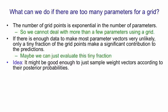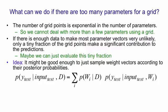An idea that makes Bayesian learning feasible is that it might be good enough just to sample weight vectors according to their posterior probabilities. If you look at this equation, the probability that we assign to a test output given the input for the test case and the training data is the sum over all points in weight space of the posterior probability of that point in weight space given the training data, times the probability distribution for the test values that we predict given that point in weight space W_i and given the test input.